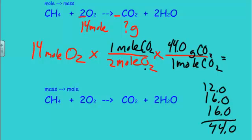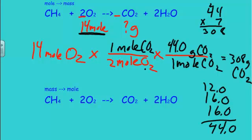Now mathematically, you would take 14 divided by 2, which is 7, and 7 times 44. 44 times 7 is 308. And that's my answer. So according to my equation, 14 moles of oxygen would yield 308 grams of carbon dioxide.